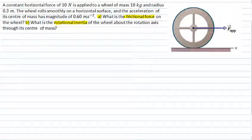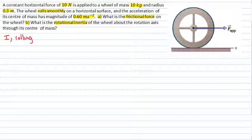We're told some important information. There's a force of 10 newtons applied to the wheel, the mass is 10 kilograms, and it has a radius of 0.3 meters. Importantly, the wheel is rolling smoothly, so the only frictional force is due to static friction — no sliding motion. The surface is horizontal, and we're given the acceleration of the center of mass as 0.6 meters per second squared. Because it's rolling motion, the velocity of the center of mass equals omega times the radius. Since it's an unusual wheel, we can't assume the rotational inertia equals just mass times radius squared — we'll find that numerically in part B.